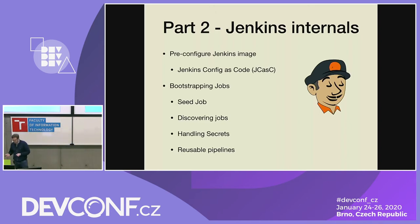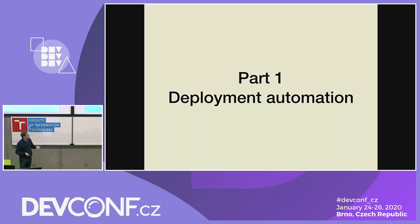We will look at how to configure a Jenkins container image and how to bootstrap all configuration in that image from scratch. This covers both the configuration of Jenkins itself, but also the configuration of the jobs that Jenkins is running. Let's get started with an application deployment.